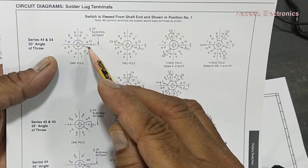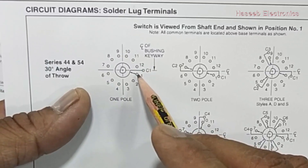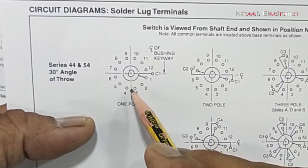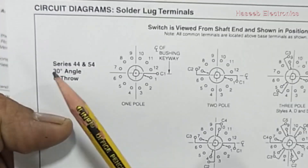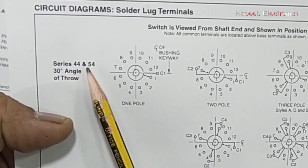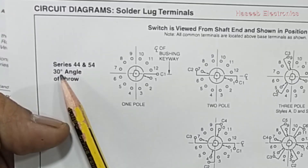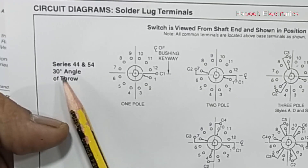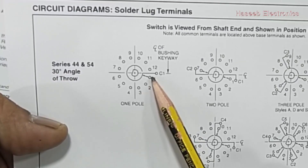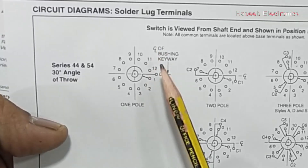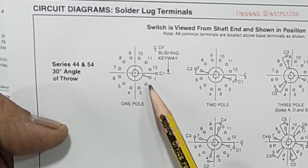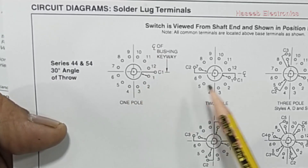Here is the common pin, and each pin has a specific throw angle. For series 45 and 54 it is a 30-degree angle of throw, so each contact pin is 30 degrees from the next one.